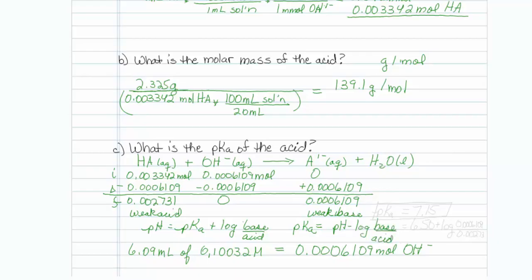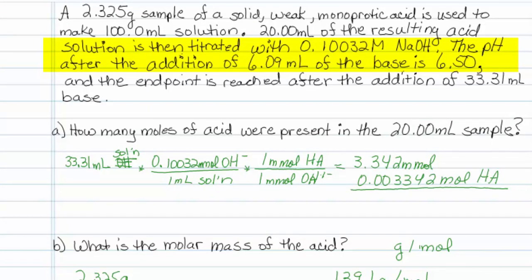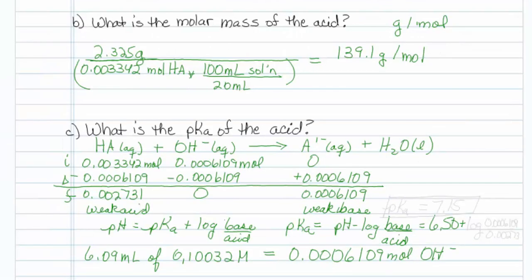My pH is 6.50 plus the log. My base amount is 0.0006109. And my acid amount is 0.002731. And if I type that into my calculator, I ought to get the pKa. And the value that comes out is 7.15. That is my pKa.